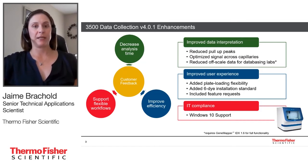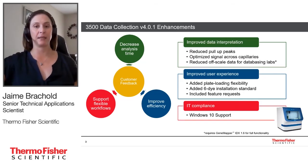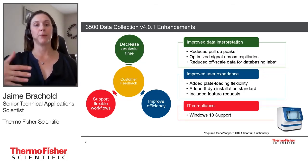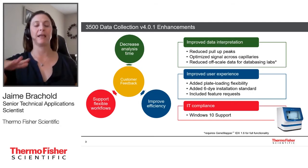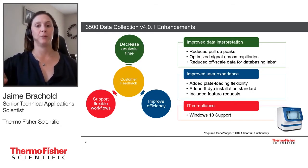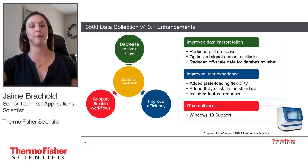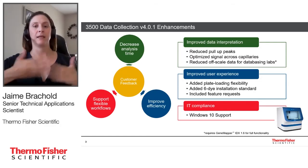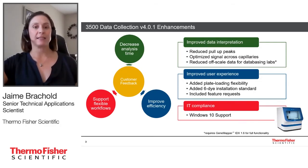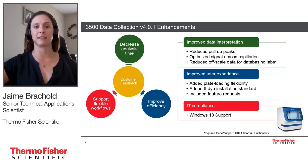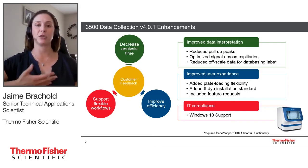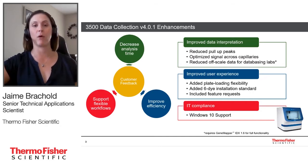We also aimed to improve the user experience, incorporating many feature requests. We added plate loading flexibility where you can pause a run, bring the auto-sampler forward, add a second plate, and restart the run. You can also pause a run after the first plate is completed, pull the auto-sampler forward, swap plates, and continue. We also added a 6-dye installation standard — on earlier versions, the HID performance check used Identifiler Ladder, but now you have the option to run a 5-dye with Identifiler Ladder or a new 6-dye with Global Filer Ladder performance check.